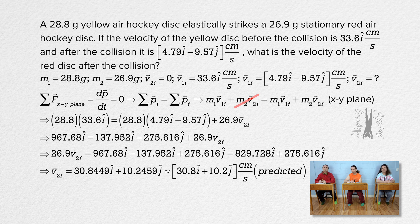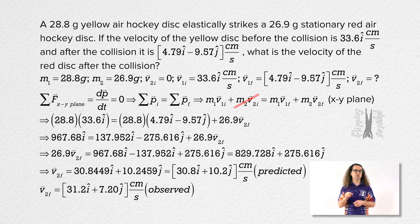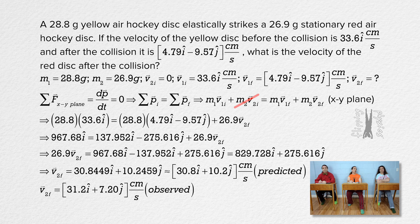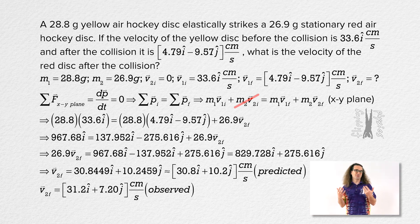Thanks Bo. I measured the observed value for the final velocity of disc two to be 31.2i plus 7.20j centimeters per second, which is pretty close to the predicted velocity. But not quite close enough for dancing. No dancing. I agree. Unfortunately, no dancing.